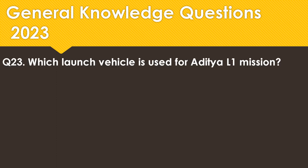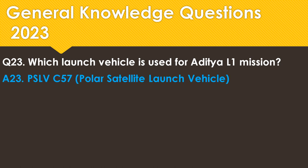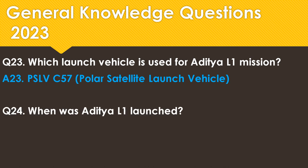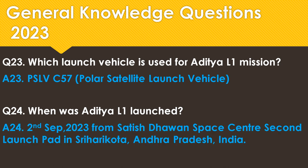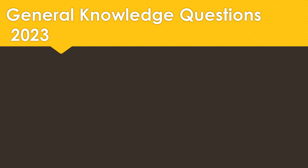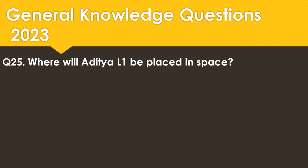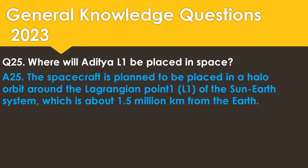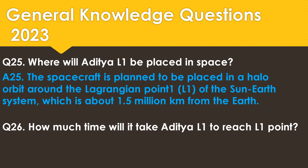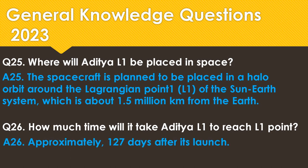Which launch vehicle is used for Aditya L1 mission? The answer is PSLV-C57. PSLV stands for Polar Satellite Launch Vehicle. When was Aditya L1 launched? It was launched on 2nd September 2023 from Satish Dhawan Space Centre, Second Launch Pad, in Sriharikota, Andhra Pradesh, India. Where will Aditya L1 be placed in space? The spacecraft is planned to be placed in a halo orbit around the L1 point of the Sun-Earth system, which is about 1.5 million kilometers from the Earth. How much time will it take Aditya L1 to reach the L1 point? Approximately 127 days after its launch.